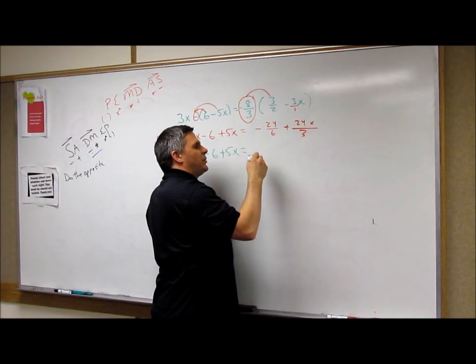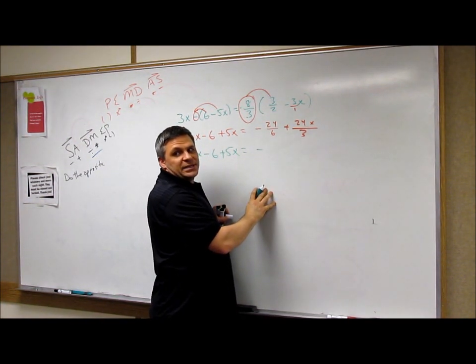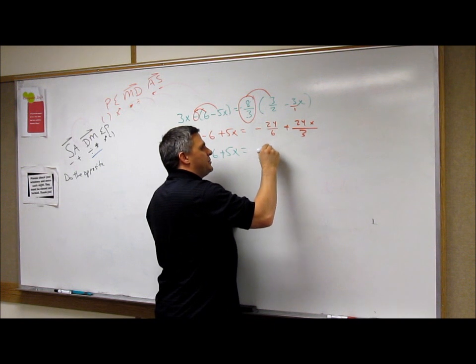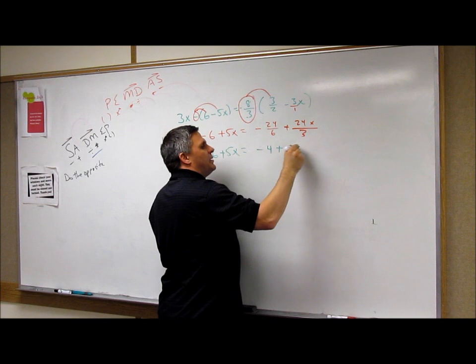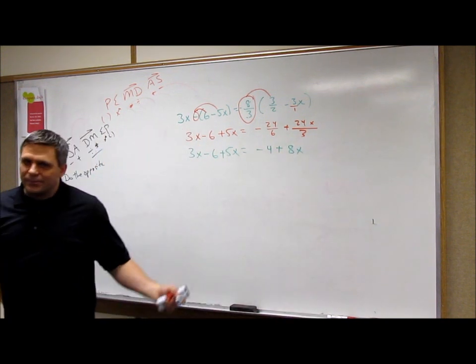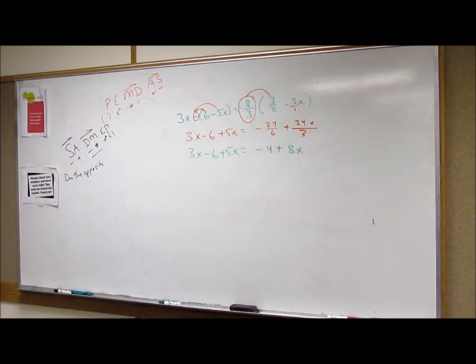And now I deal with them. Before I collect my like terms, let's deal with this. Just 3x minus 6 plus 5x. Can these break down? 6 goes into 24 how many times? 4. 3 goes into 24 how many times? 8. I don't have any fractions now.